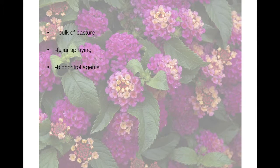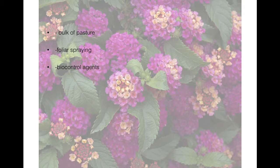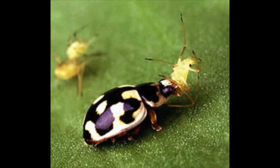Biocontrol agents are another method. There are almost 40 biocontrol agents found across 32 countries, including hemiptera, leaf-mining beetles, diptera, coleoptera, and the seed-feeding fly. These reduce the vigour and competitiveness of Lantana in certain areas.